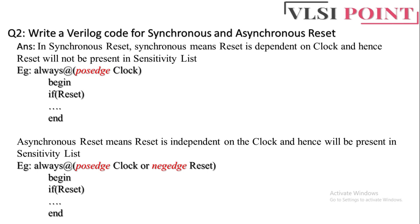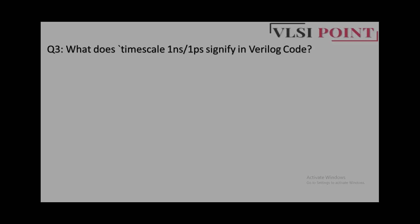For synchronous reset, simply write: always @(posedge clock), then begin your commands. For asynchronous reset, write: always @(posedge clock or negedge reset), then begin-end with an if-else statement.